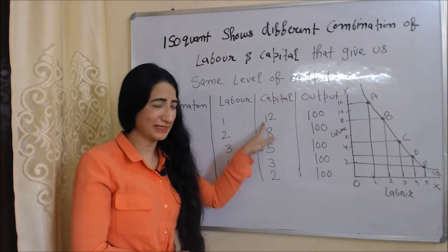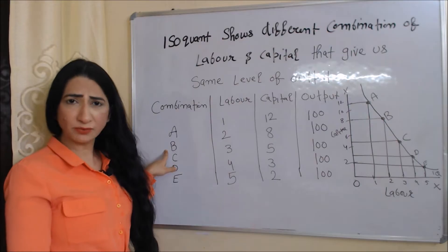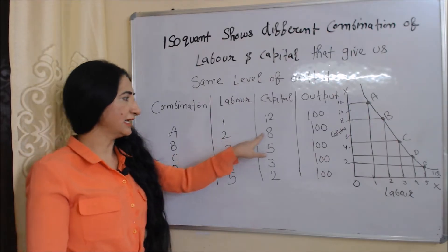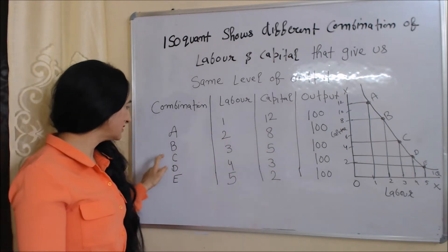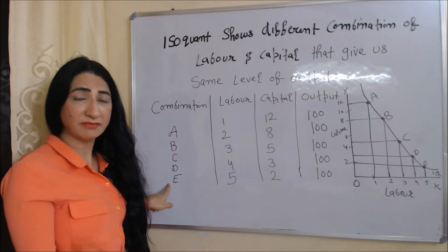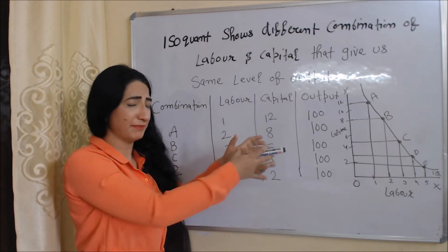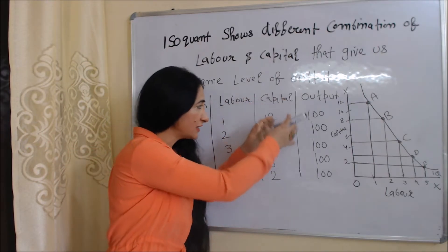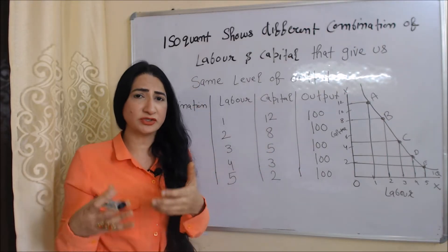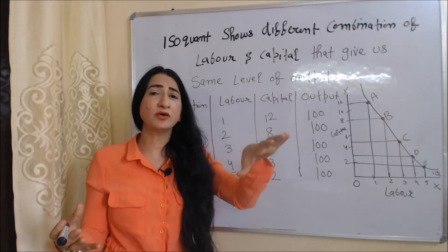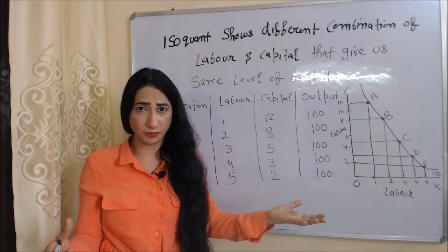At combination A, we are using one unit of labor and 12 units of capital and getting output equal to 100. At combination B, we are using two units of labor and eight units of capital and getting output equal to 100. Similarly, you can see combinations C, D, and E. Whatever combination of labor and capital we use, we receive the same amount of 100 units of output.